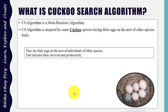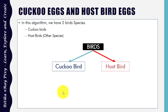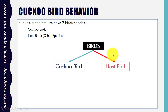The Cuckoo Search Algorithm is a meta-heuristic algorithm inspired by some cuckoo species that lay their eggs in the nests of other bird species, which increases their population and survival. In this algorithm we have two bird species: the cuckoo bird and the other bird, which we denote here as the host bird. So we have cuckoo and host bird.